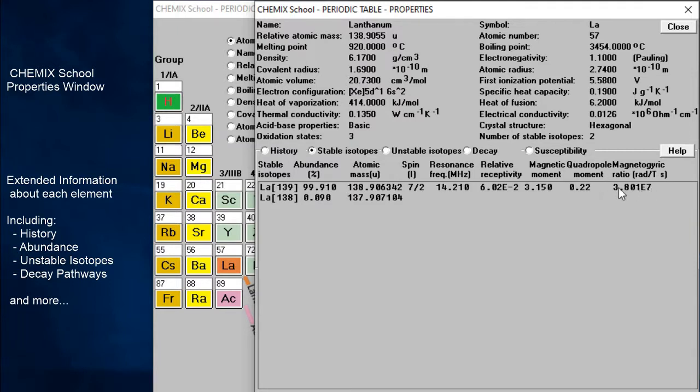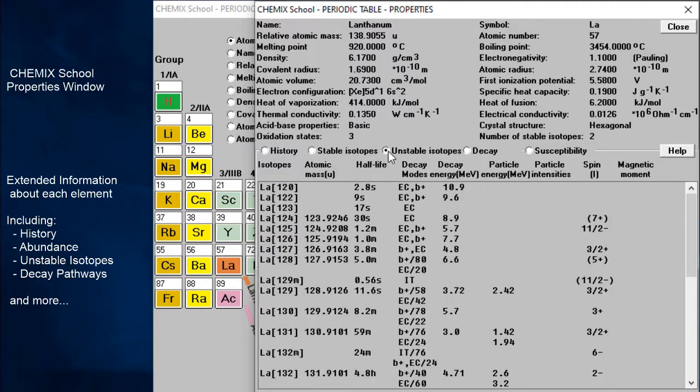If we click on the unstable isotopes radio button, we will get information about radioactive decay, decay products, and related information such as isotopes and their mass numbers or nucleon numbers, atomic mass, half-life, decay modes, decay energy, particle energy, particle intensities, spin, and magnetic moment.